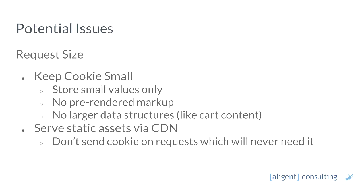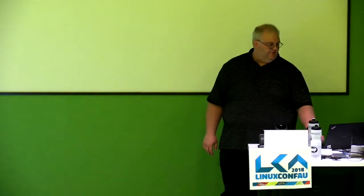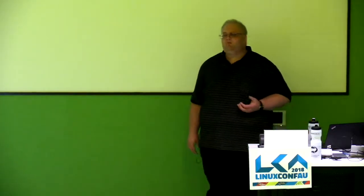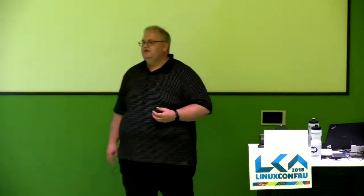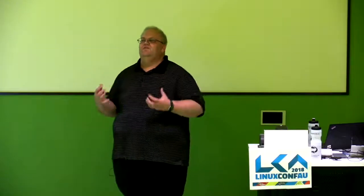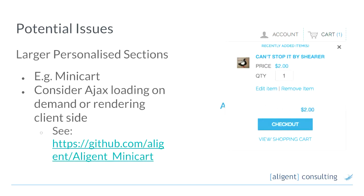We want to try and make that cookie as small as we possibly can, because that's going to have a significant impact on our request-response speed. All of our static assets, our images, our JavaScript and so on, we can serve via a CDN on a different hostname so we don't have to send that cookie at all. At the end of the day there are still going to be some larger sections of the page we can't just stash into a cookie. If a customer has a lot of items in their cart, by the time we include a hyperlink, name, price, image, and quantity for every single one, we'll blow through that 4K limit pretty quickly.